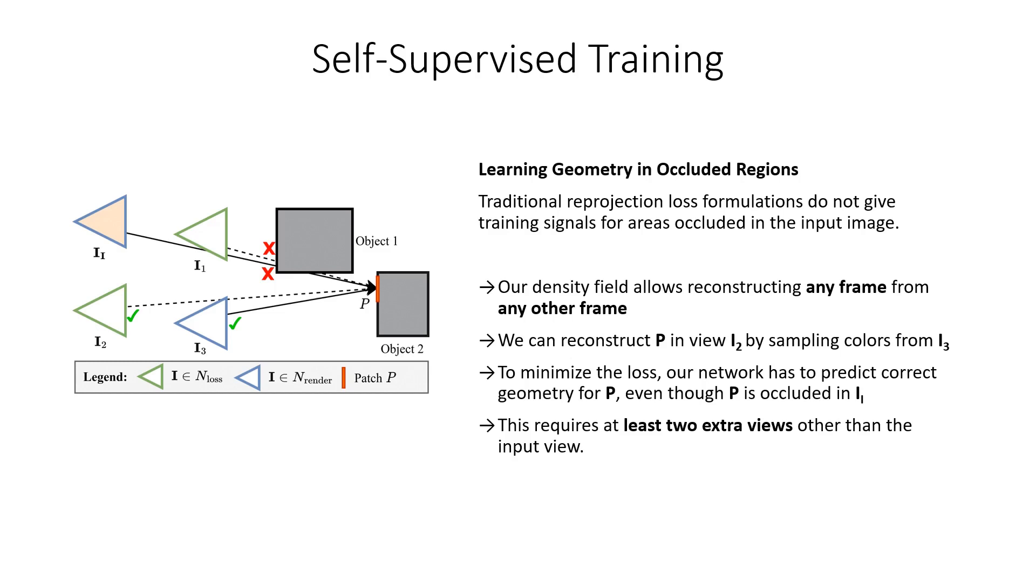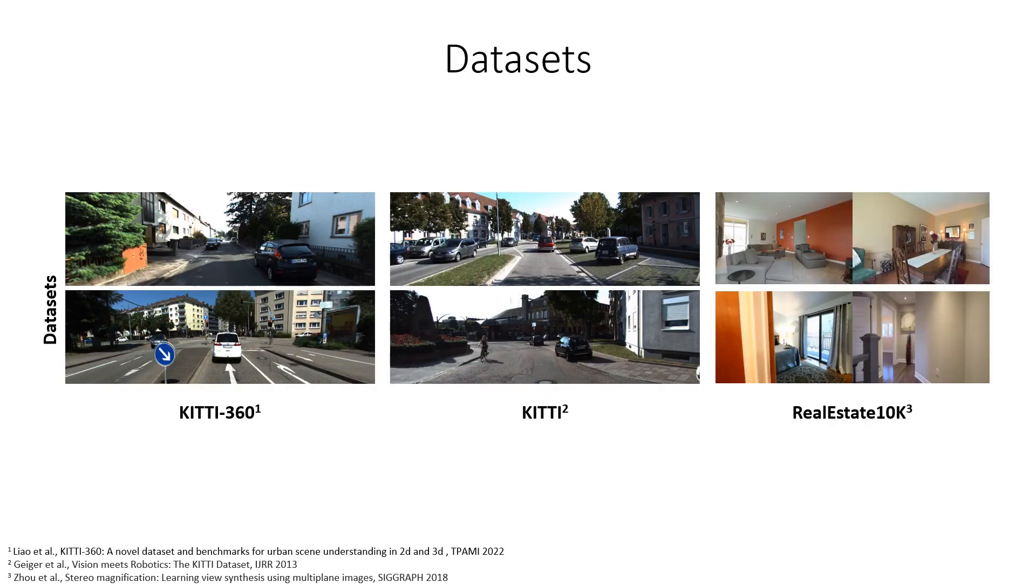Note that in order to learn geometry about occluded areas, we require at least two additional views besides the input image during training. Through our proposed architecture and our novel training scheme, we can train our method on challenging datasets like KITTI 360, KITTI, and RealEstate10K.